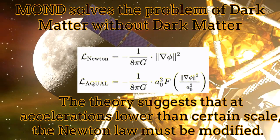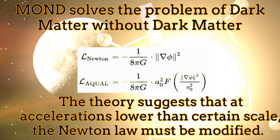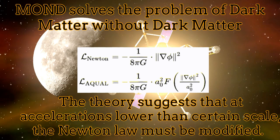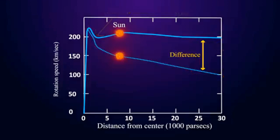However, the theory of Modified Newtonian Dynamics is able to explain the observed phenomena of the galaxy rotation curve without using dark matter. The theory suggests that at accelerations lower than a certain scale, the Newtonian law must be modified.